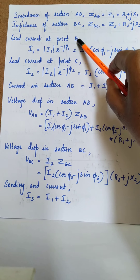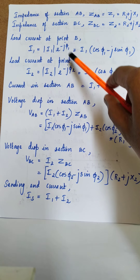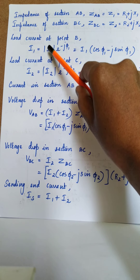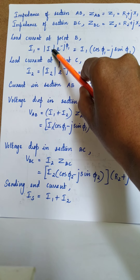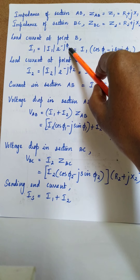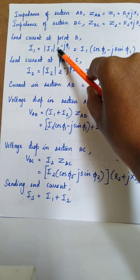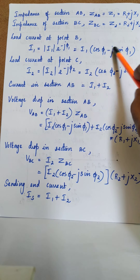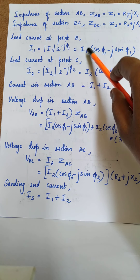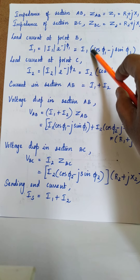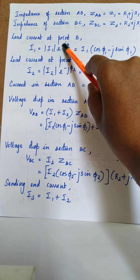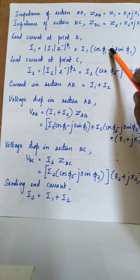The load current at point B — remember this is an AC system — so we have to consider both the magnitude as well as the phase angle. The load current at point B, I1, is a phasor equal to magnitude of I1 times e to the power minus J phi 1. In terms of cos and sine, since we have power factor cos phi, we write it as I1 times (cos phi 1 minus J sin phi 1). The minus sign is because it is a lagging power factor, giving us I1 cos phi 1 minus J I1 sin phi 1.